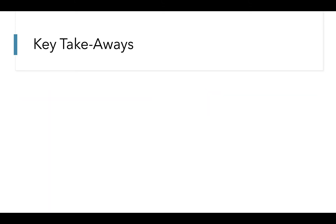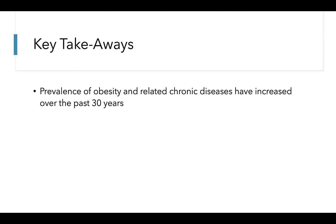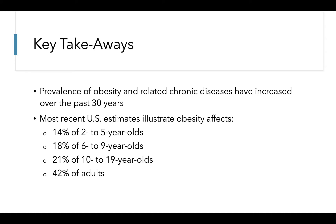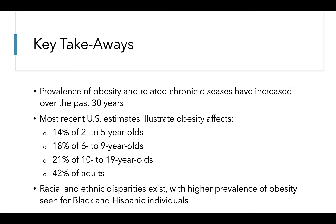Overall, the data presented in this lecture illustrate that the prevalence of obesity and related chronic diseases has increased significantly over the past three decades. Most recent U.S. estimates illustrate that obesity affects significant proportions of all age groups, including 14% of 2 to 5-year-olds, 18% of 6 to 9-year-olds, 21% of 10 to 19-year-olds, and 42% of adults. We also see sociodemographic disparities in the prevalence of obesity, with higher prevalence for adults and children who identify as Black or Hispanic. Thank you for learning with me.